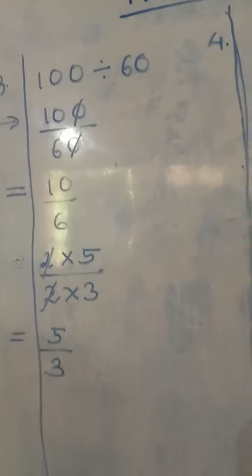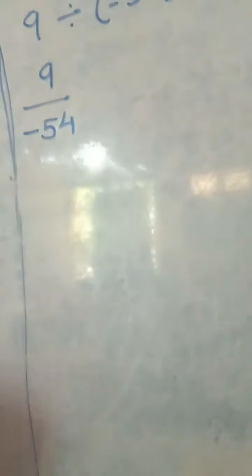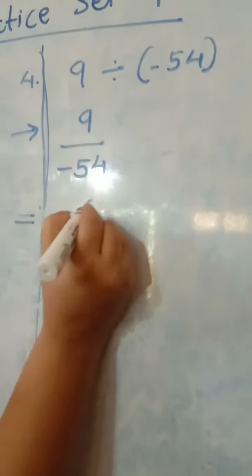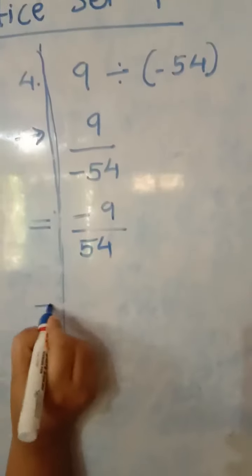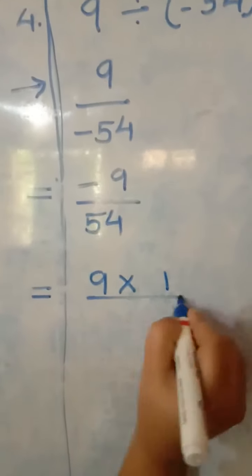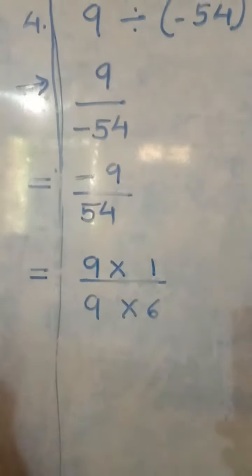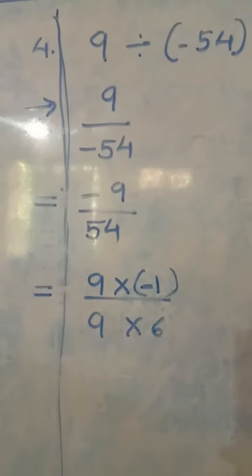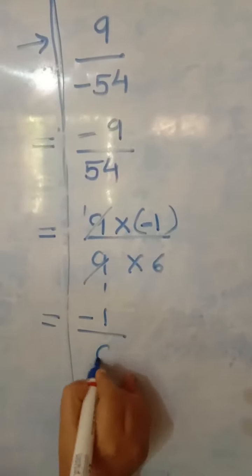Now the fourth sum: 9 divided by negative 54. Write it in fraction form. The negative sign should not be in the denominator, so write it in the numerator: negative 9 upon 54. The common table to use here is 9. 9 ones are 9 and 9 sixes are 54. Since 54 is positive, we require a minus sign only in the numerator — one number positive, one negative gives a negative answer. 9 cancels with 9, so the answer is negative 1 upon 6.